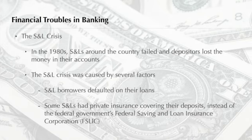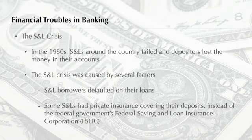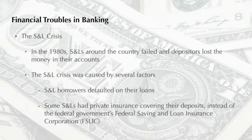Perhaps the most visible sign of instability in U.S. banking during the 1980s involved savings and loan associations. A number of factors contributed to the S&L crisis. First, borrowers failed to make payments on many loans granted by S&Ls in the early 1980s, causing some to fail and others to be absorbed by larger institutions. Another factor was that some S&Ls had only private insurance — about 30 states approved private depository insurance during the mid-1980s, allowing state-chartered S&Ls to choose private insurance instead of coverage from the Federal Savings and Loan Insurance Corporation, or FSLIC. By 1986, nearly 18% of the nation's S&Ls had chosen private insurance; however, in some states private insurance plans lacked the financial resources needed to handle S&L failures.